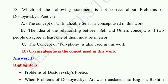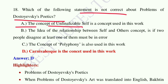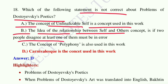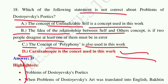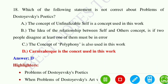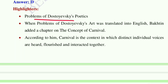Question number 18: which of the following statements is not correct about Problems of Dostoevsky's Poetics? Option A: the concept of 'unfinalizable self' is used in this work. Option B: the idea of the relationship between self and others — the concept that if two people disagree, at least one must be in error. Option C: the concept of polyphony is also used. Option D: carnivalesque is the concept used in this work. Option D is the correct answer — carnivalesque is not the primary concept used in this work.